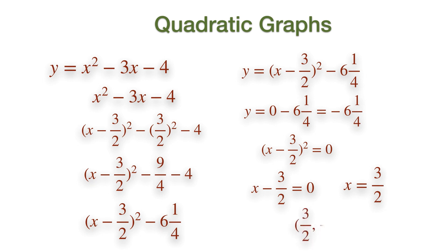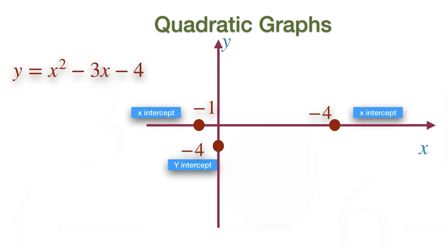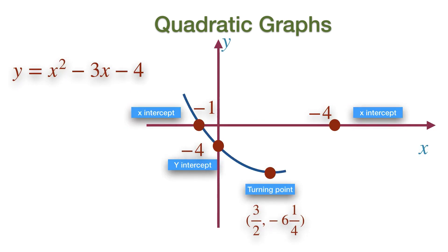Hence, the coordinate of the minimum point, or the turning point, is at (3/2, minus 6 and a quarter). This is roughly shown in the graph. You can now connect all the points using a smooth curve, which gives us the sketch of Y equals X squared minus 3X minus 4.